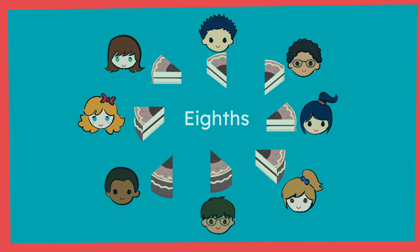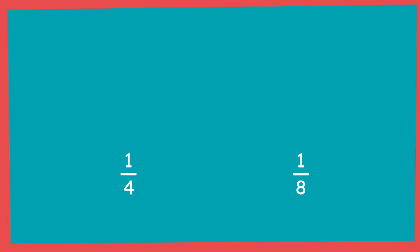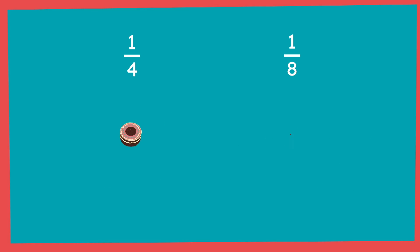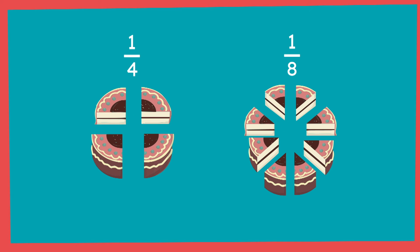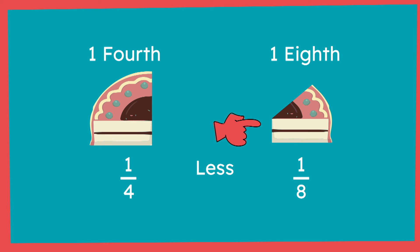So which is greater — one-fourth or one-eighth? Remember, four in one-fourth represents the size of the units, not the whole number four. We cannot compare four and eight like whole numbers because we're comparing two wholes — one partitioned into fourths and one partitioned into eighths. When comparing one-fourth and one-eighth, we're comparing parts of a whole. Looking at the model, we can see that one-fourth is larger than one-eighth, meaning one-fourth is greater than one-eighth. This also means one-eighth is less than one-fourth.